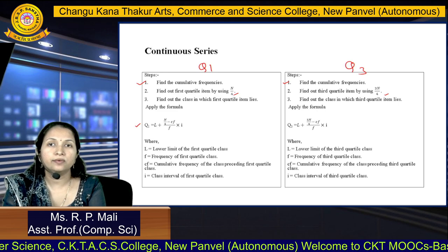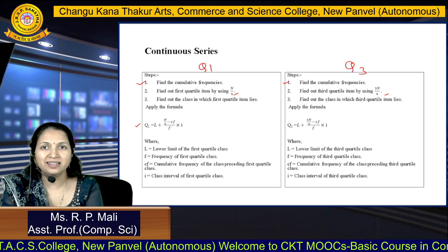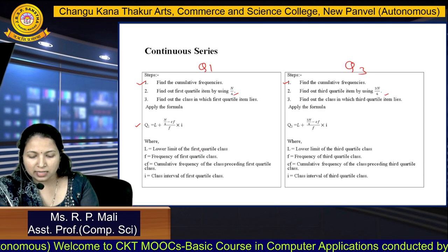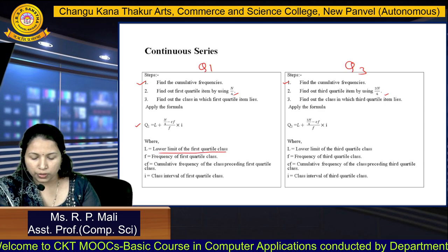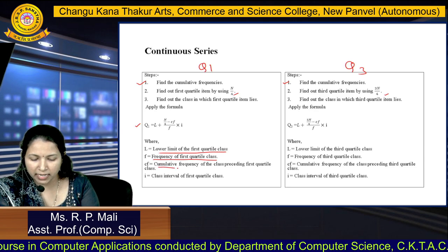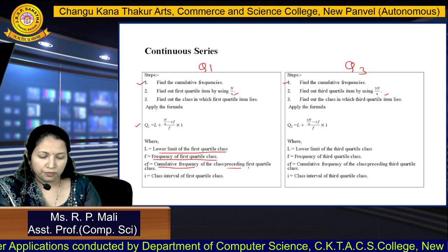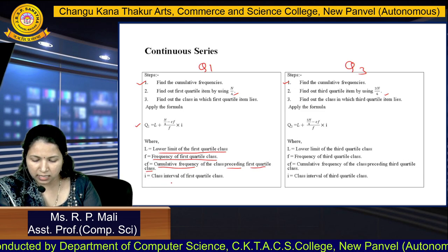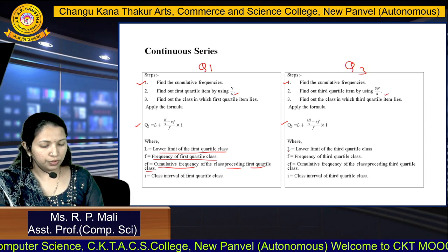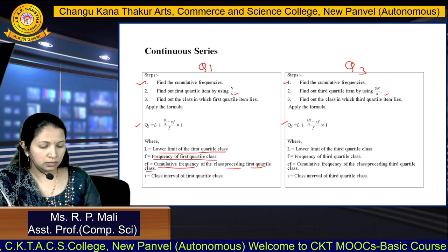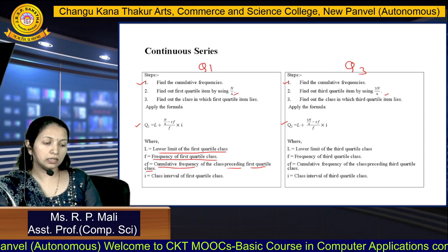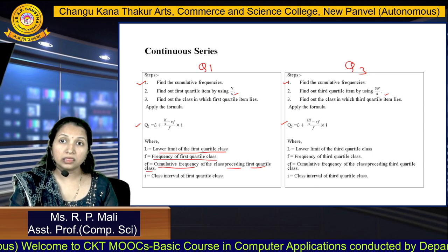The formula is: Q1 equals L plus (N by 4 minus Cf) divided by F, into I. Where Q1 is the first quartile. L is the lower class limit of the first quartile class. F is the frequency of the first quartile class. Cf is the cumulative frequency of the class preceding the first quartile class. And I is the class interval of the first quartile class. The Q3 formula is similar: L is the lower class limit of the third quartile class. F is the frequency of the third quartile class. Cf is the cumulative frequency of the class preceding the third quartile class. And I is the class interval of the third quartile class.